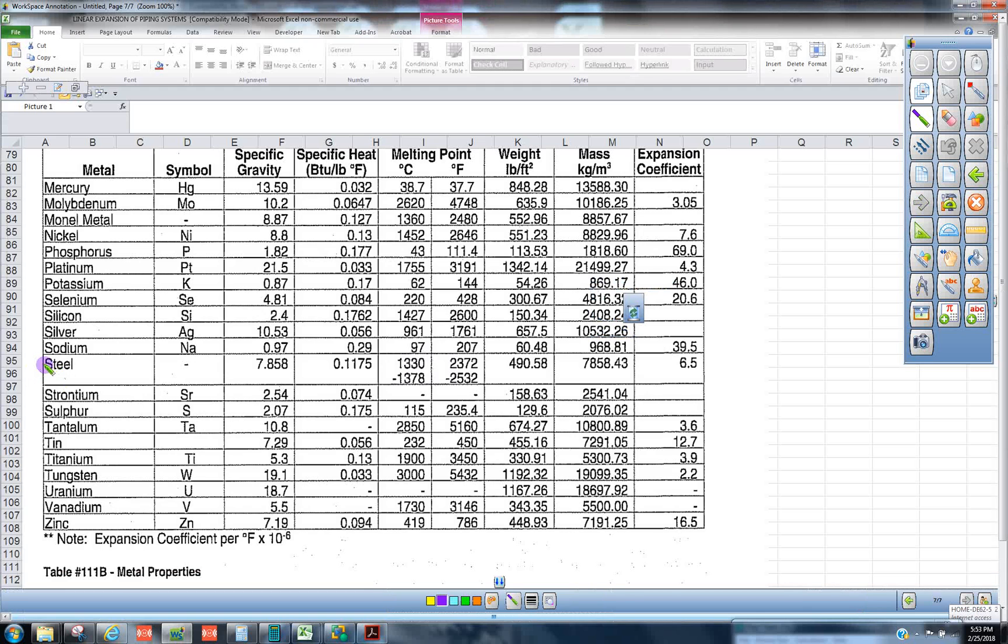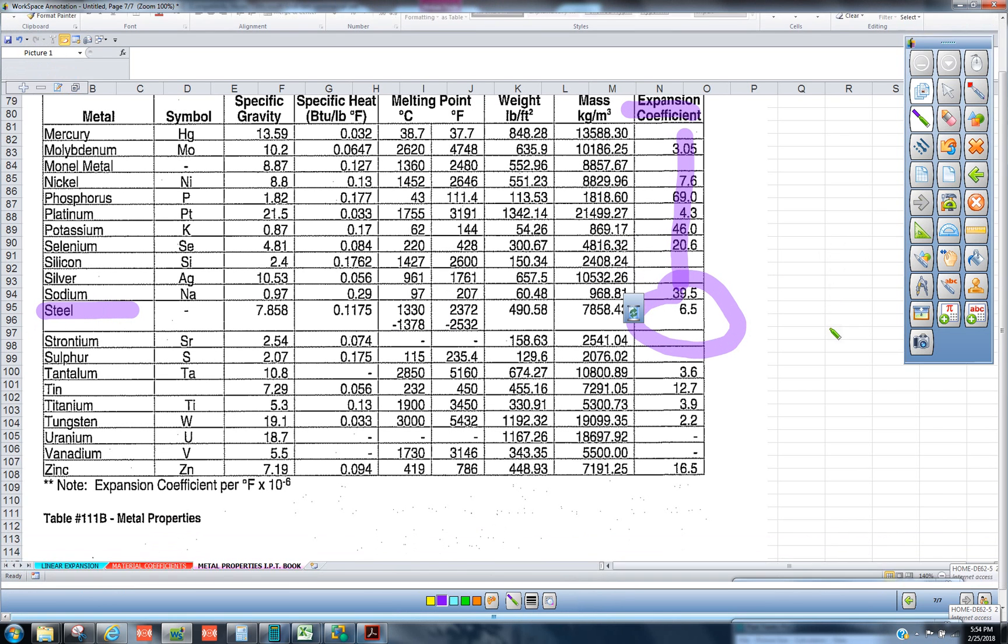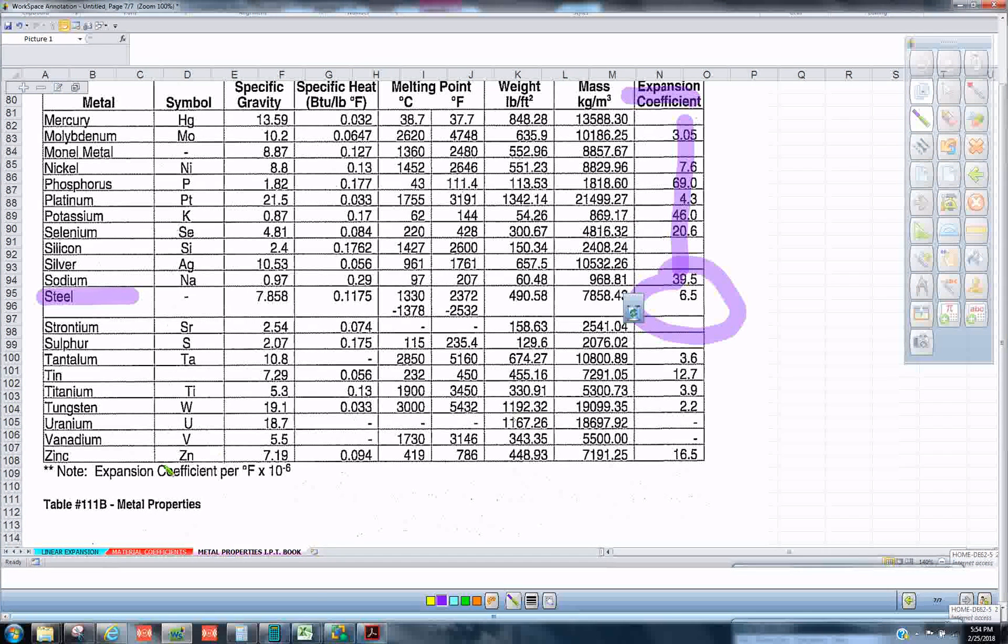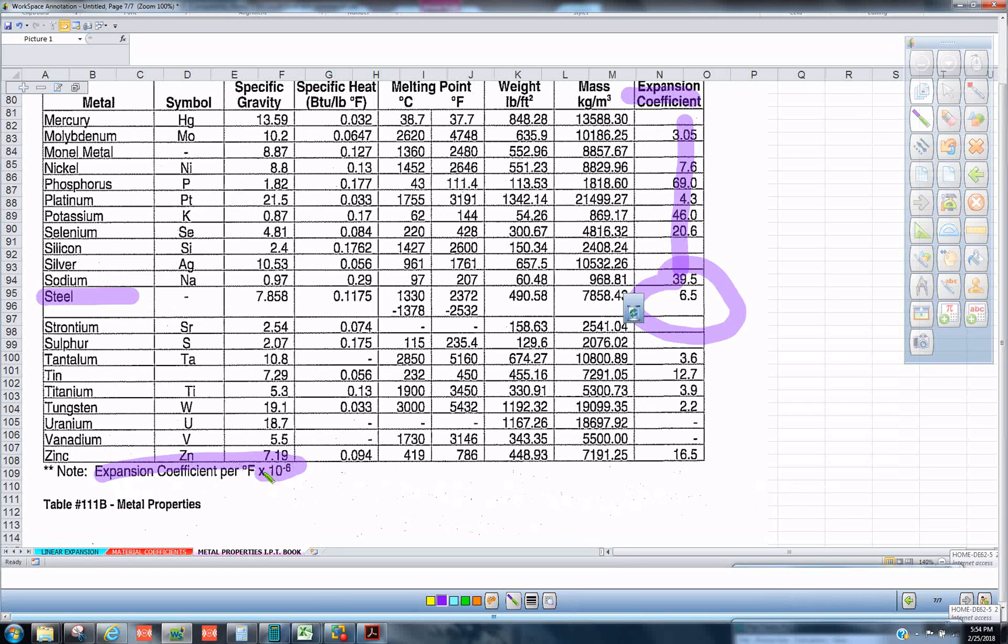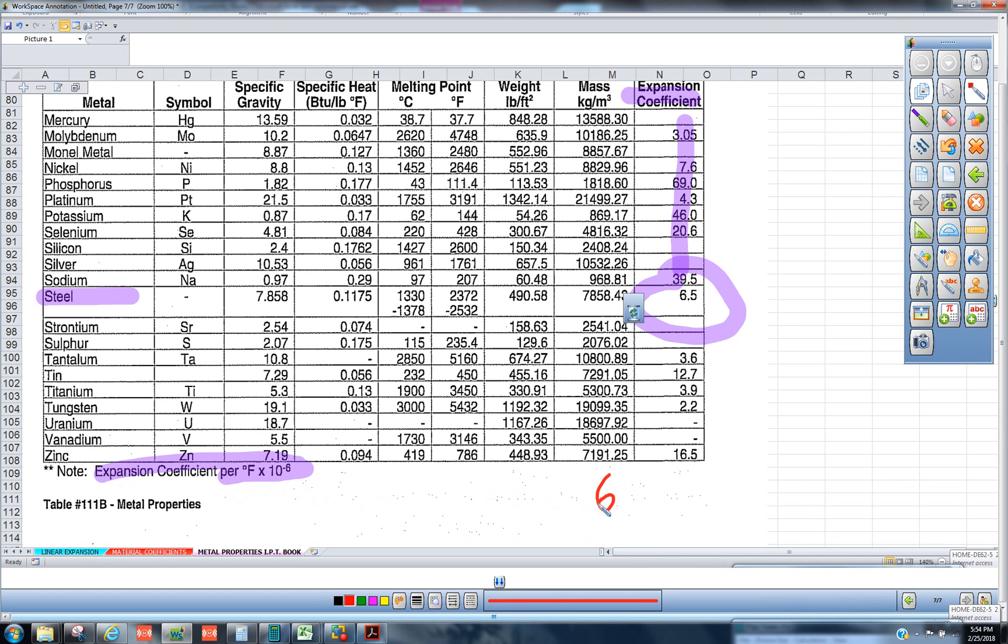So when you look at steel and it says the expansion coefficient is 6.5, well there's a stipulation that it's 10 to the negative 6 exponent. So the true number is 6.5 and then we have to move the decimal place over six places.